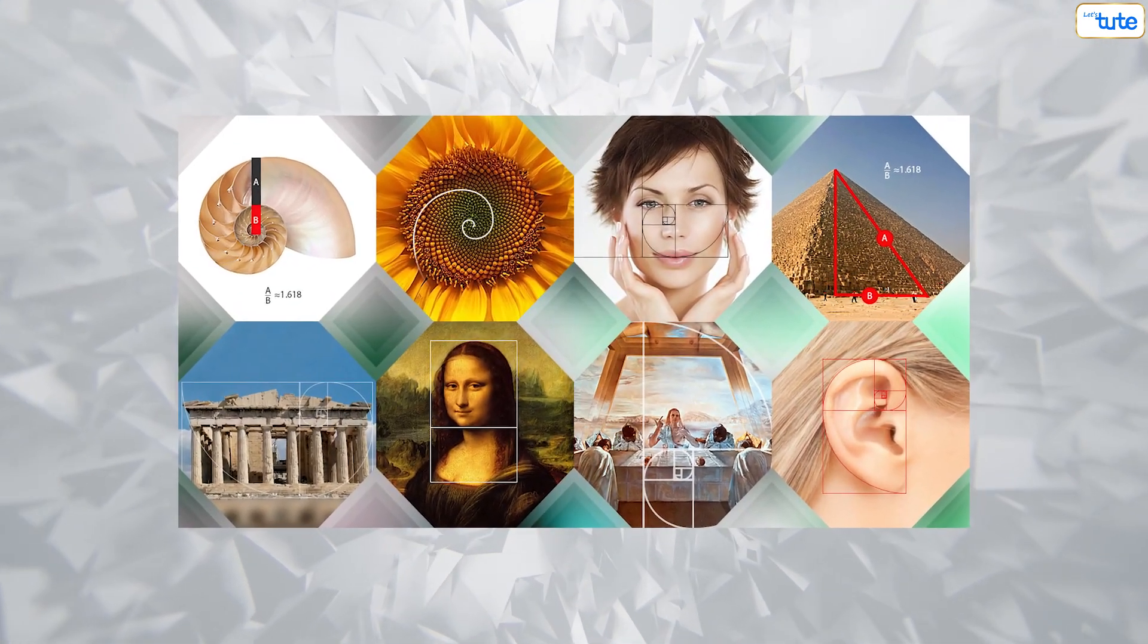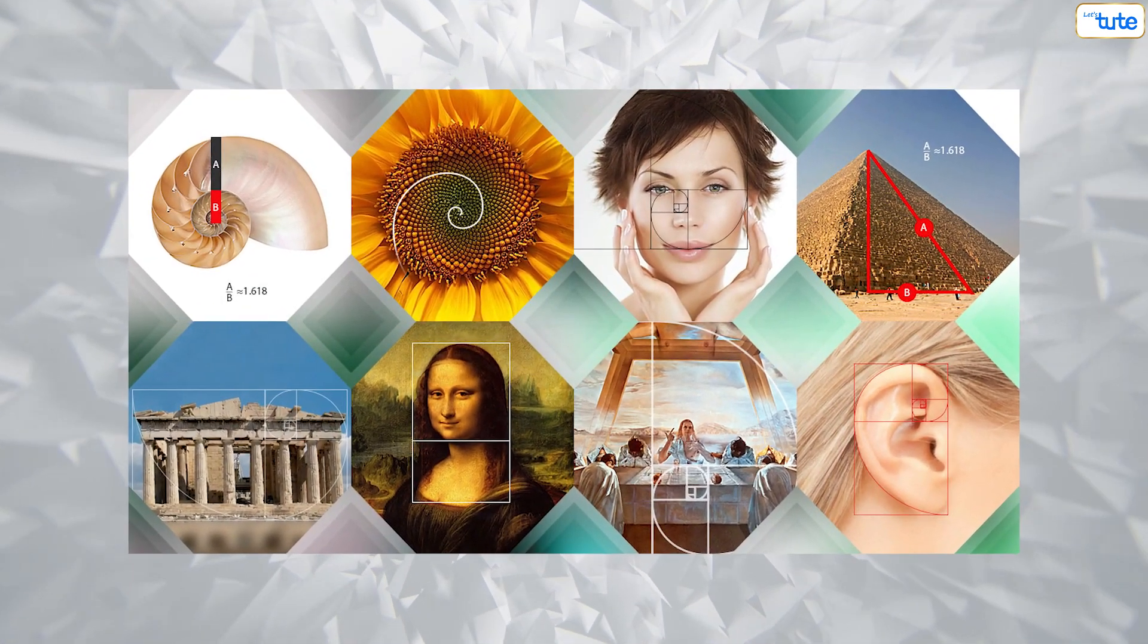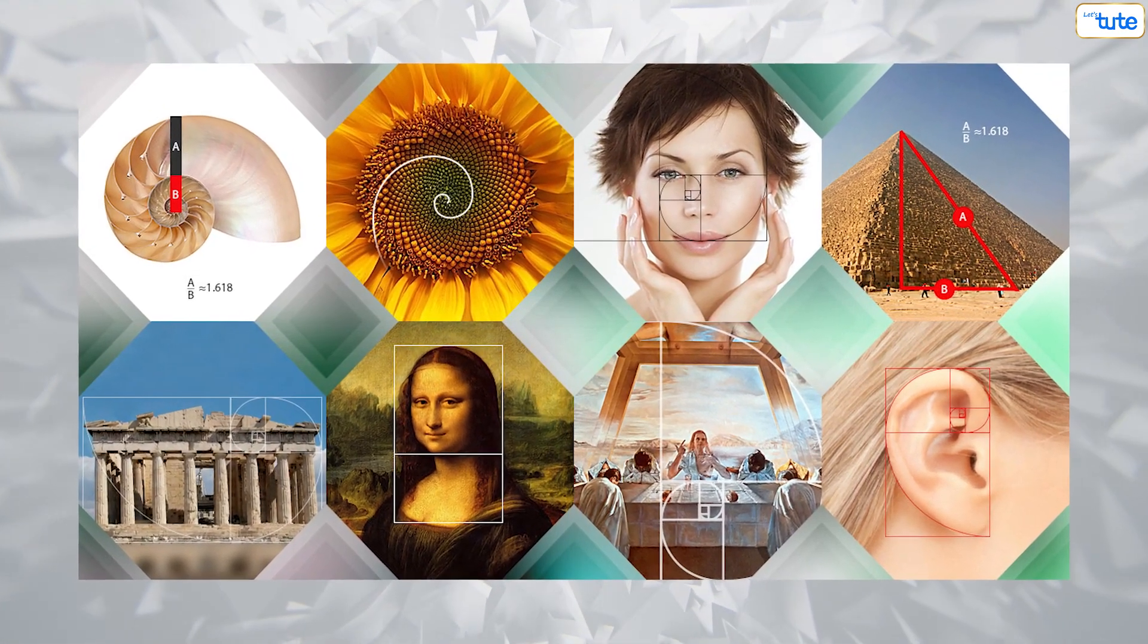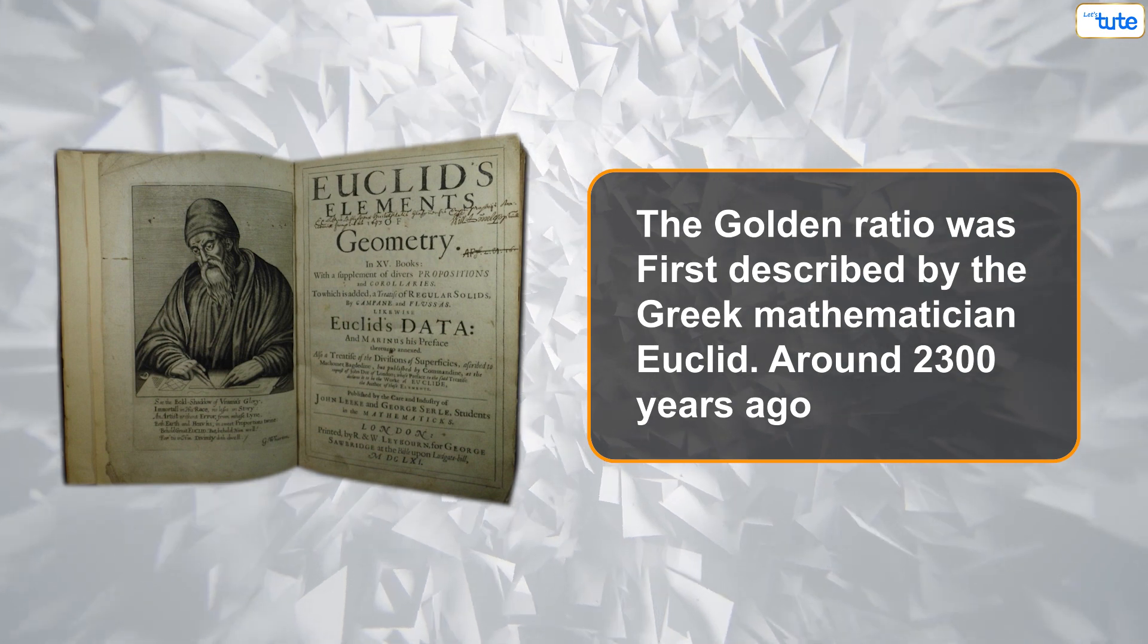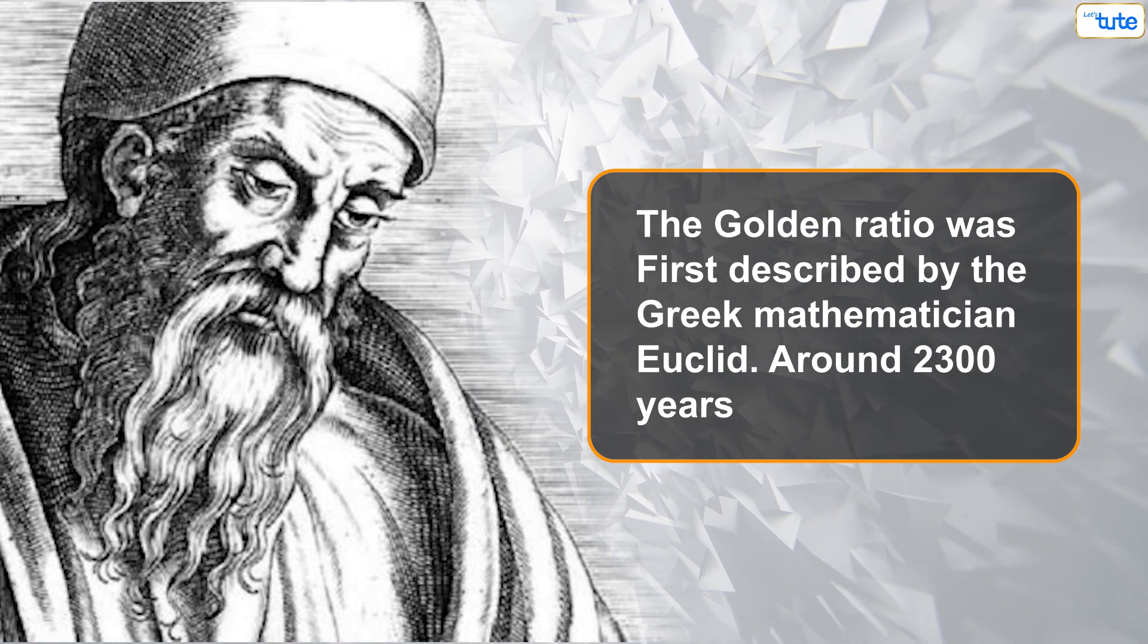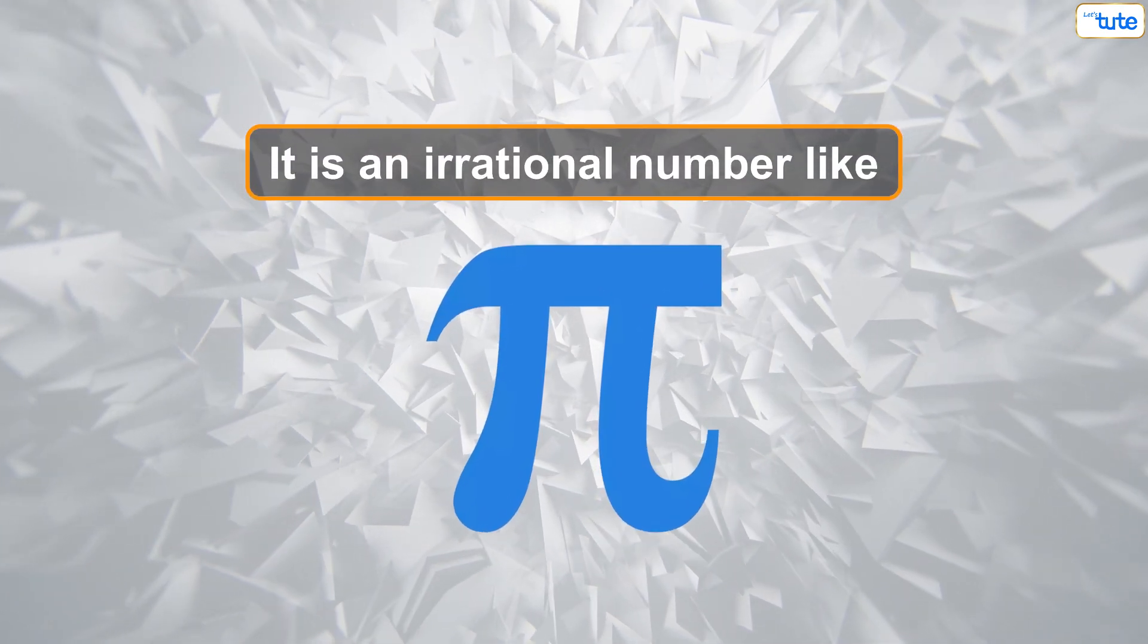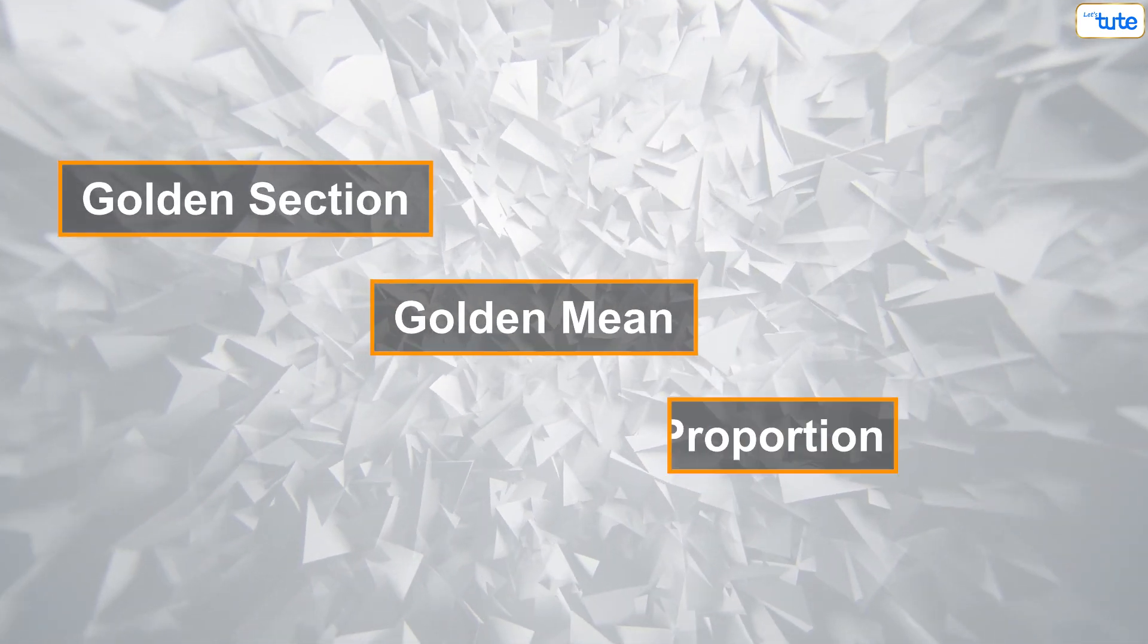So now that you have an understanding of what the golden ratio is and how it is used, let's see how it came about. The golden ratio was first described by the Greek mathematician Euclid around 2300 years ago. It is an irrational number like pi. It is also known as the golden section, golden mean or divine proportion.